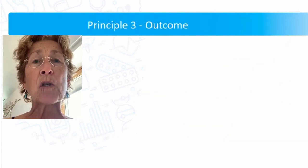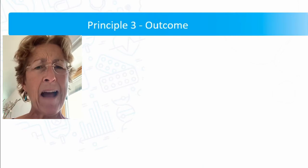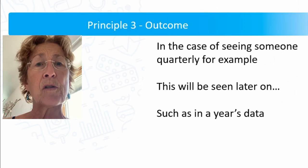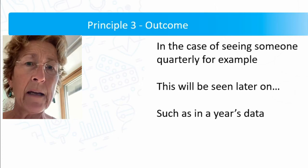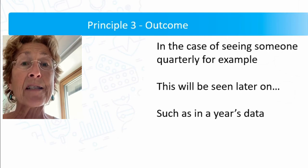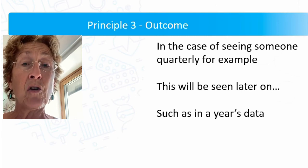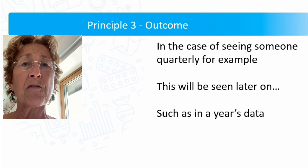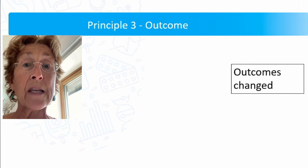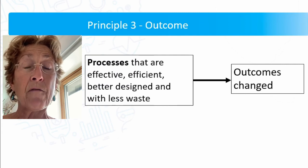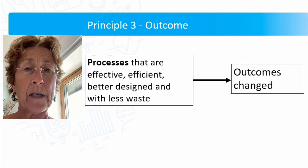And then thirdly of course is the outcome. But the outcome, which is fulfilling the commitment you've got to see and communicate with somebody quarterly, is something that has to happen down the line. It's something that's coming out in the year's data, not in the moment's data. And that's something that we have to understand. We won't see the outcomes change until we've made our processes much more effective, efficient and better designed with less waste.